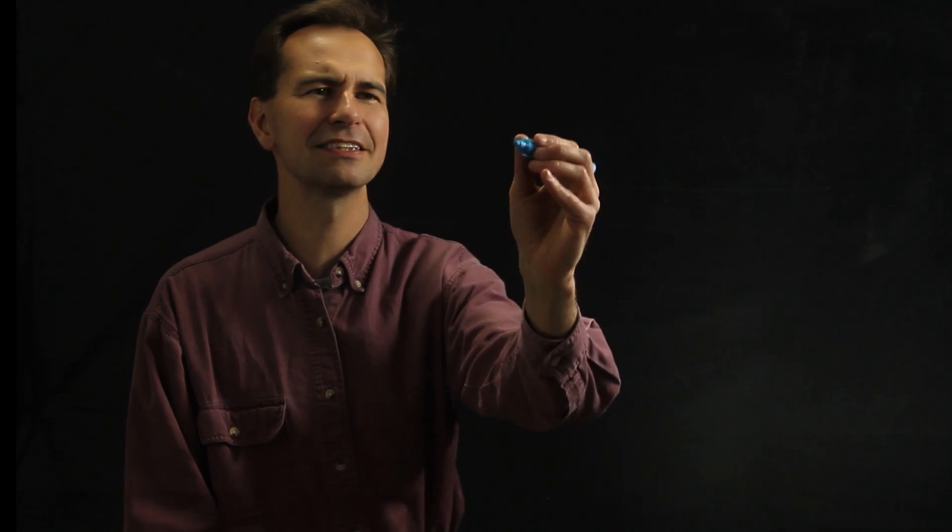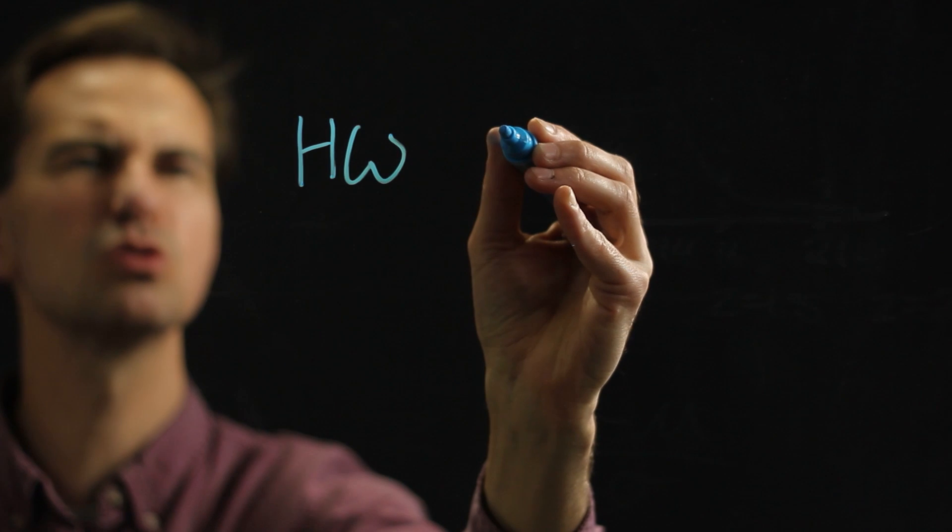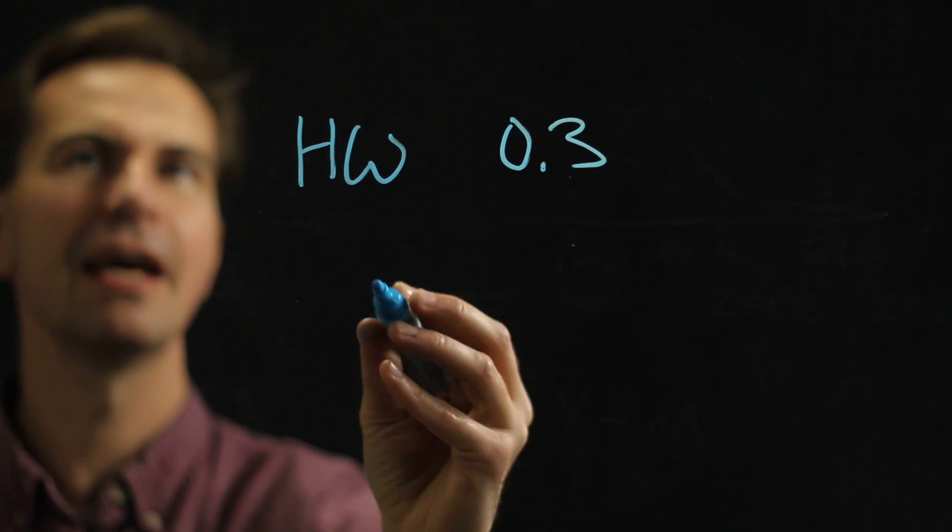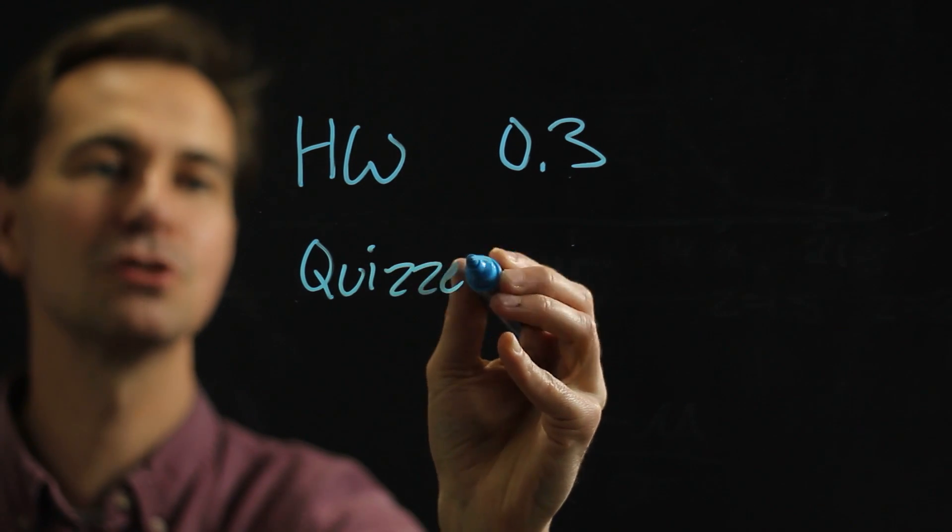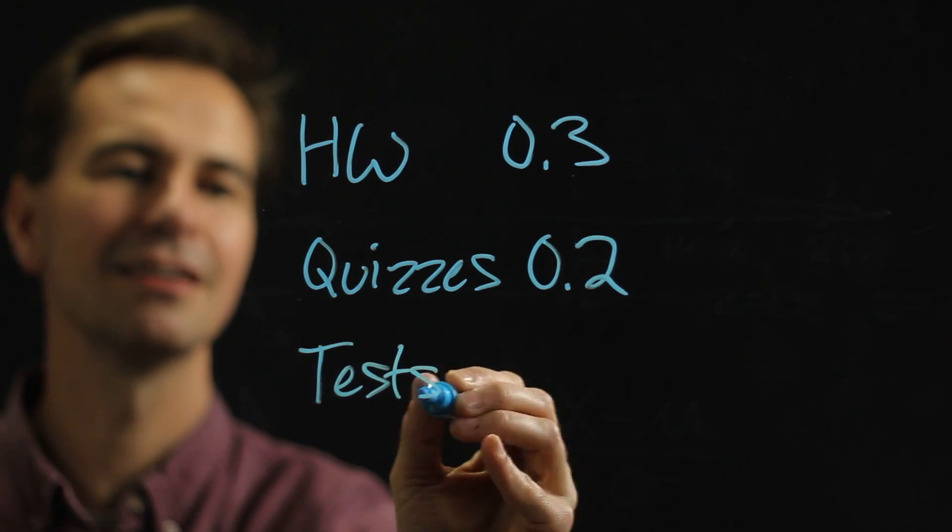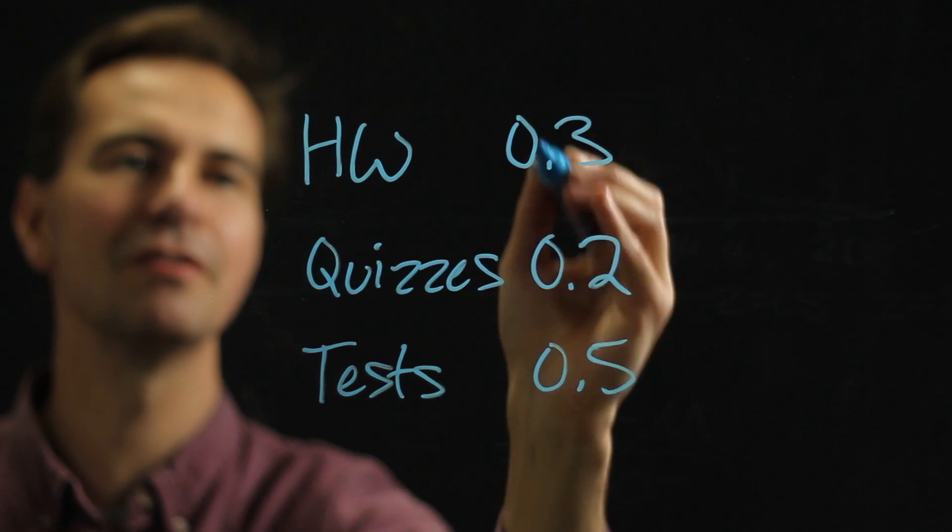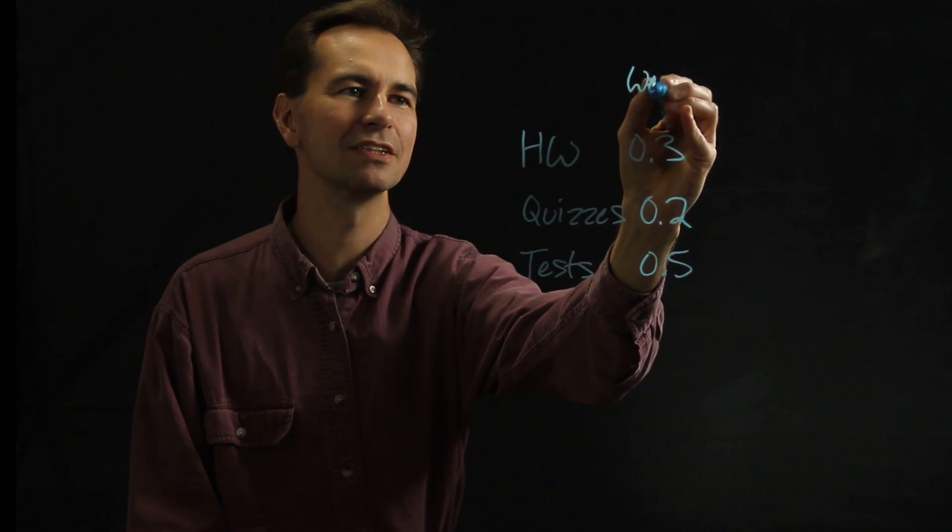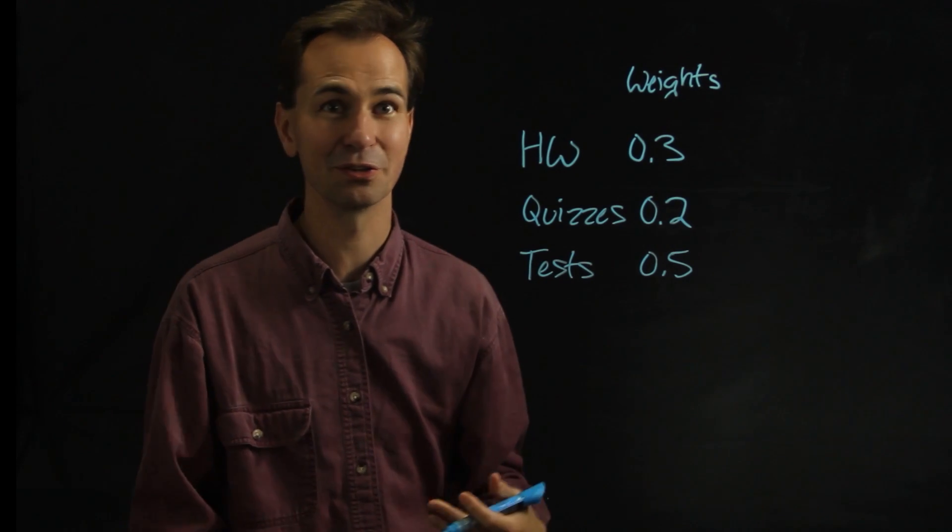Let's say that you have a grade for a class and it's made up of a bunch of different things. Let's say that the homework makes up 30% of your grade, so 0.3, and the quizzes make up 20% of your grade and the tests make up the rest. So 30%, 20%, 50%. These are the weights of these different types of things that go into your grade.